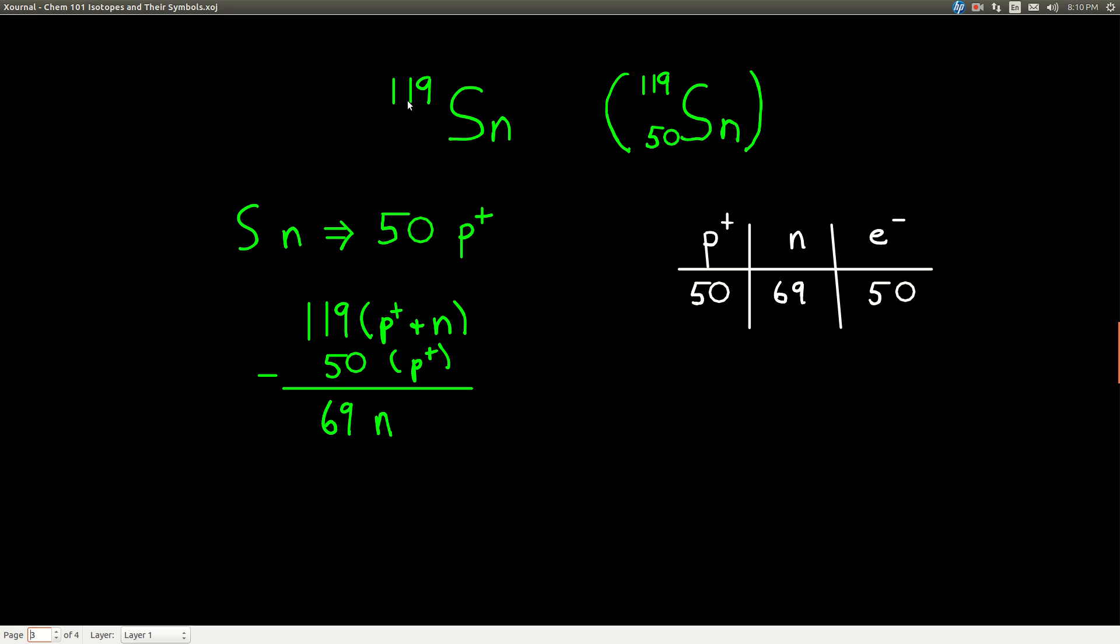Because we know the mass number is 119, which is the protons plus neutrons, if we subtract the atomic number, the number of protons, which is 50 in this case, the difference is how many neutrons we have - 69.